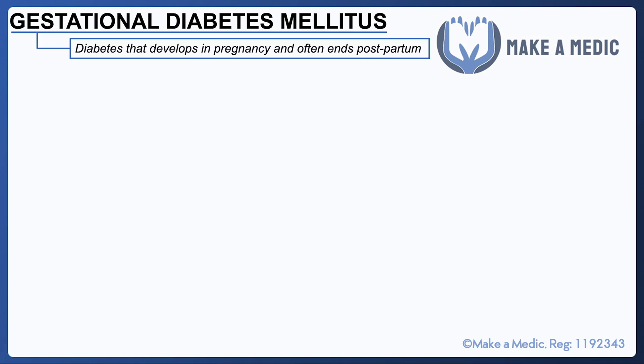Gestational diabetes mellitus is defined as diabetes that develops in pregnancy and often ends in the postpartum period.